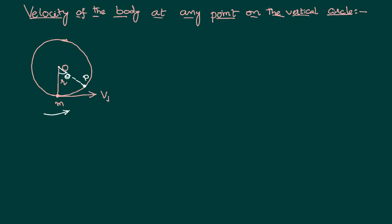At any point, the velocity is in the tangential direction. We consider two points A and B, where velocity at A is V1 and velocity at B is V. Between these two points we apply the law of conservation of energy, taking the lowermost point of the vertical circular motion as the reference point, so potential energy at that reference point equals zero.